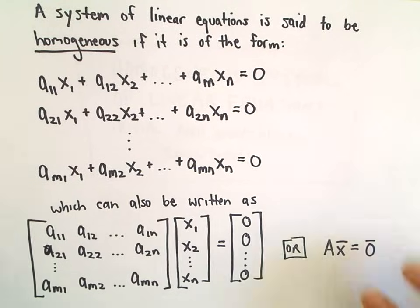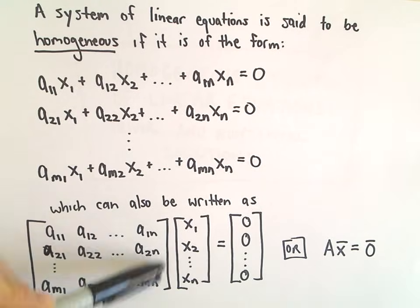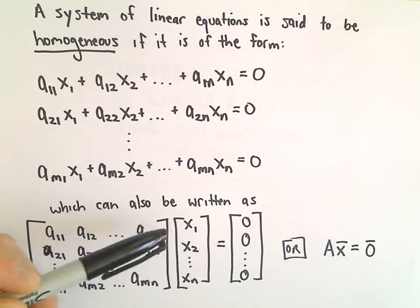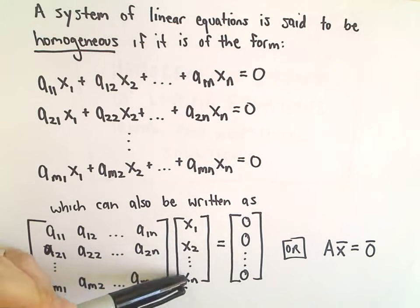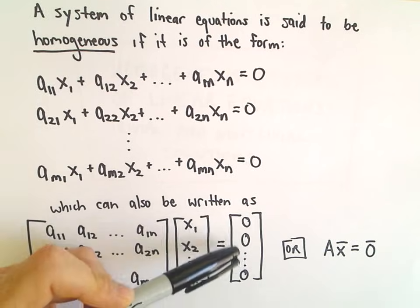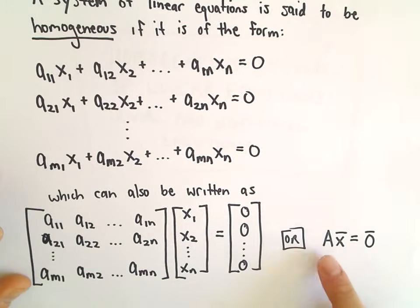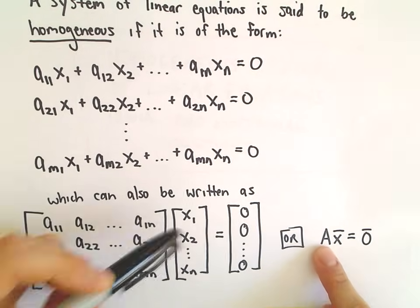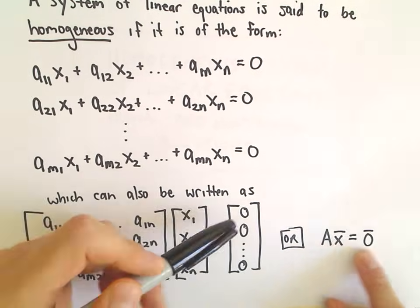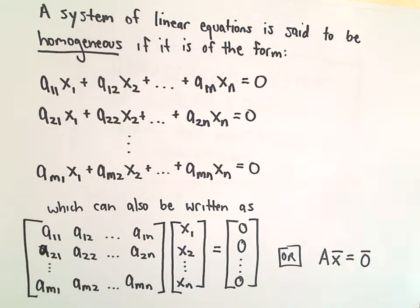We can also write this as a matrix equation by taking the coefficients and putting those in one matrix, multiplying that by the vector x sub 1, x sub 2, down to x sub n. We just set that equal to a vector of zeros. More shorthand: we can write this as matrix A times vector x equals the zero vector. That's the definition of a homogeneous system.